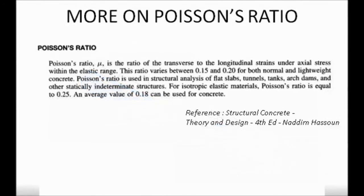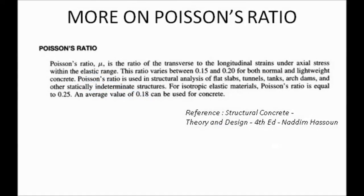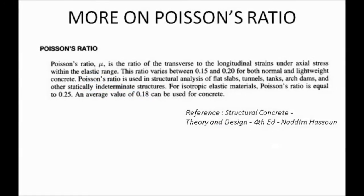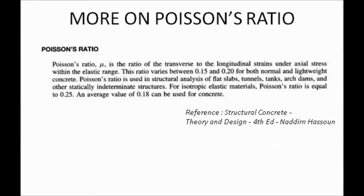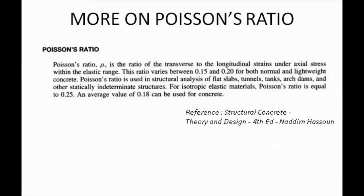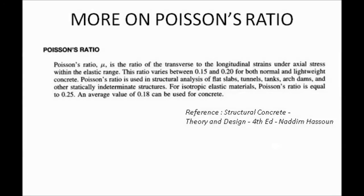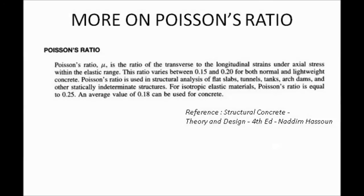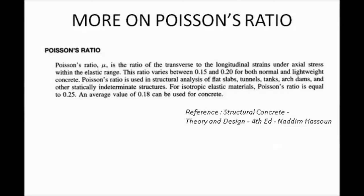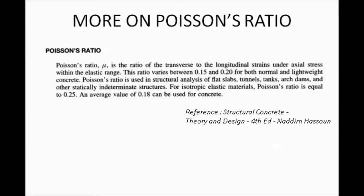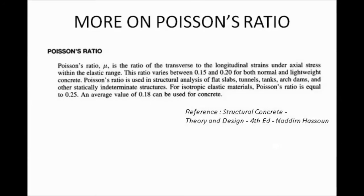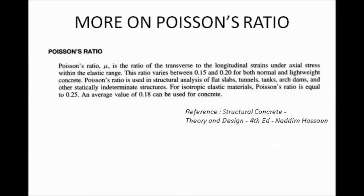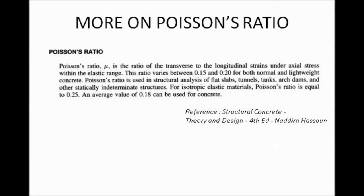More on Poisson's ratio. The following definition has been referred from the book Structural Concrete by Nadeem Hassoun. Poisson's ratio is basically the ratio of transverse to longitudinal strains under axial stress within elastic range. The ratio varies between 0.15 and 0.2 for both normal and lightweight concrete. Poisson's ratio is used in structural analysis of slabs, tunnels, tanks, arch dams, and other statically indeterminate structures.